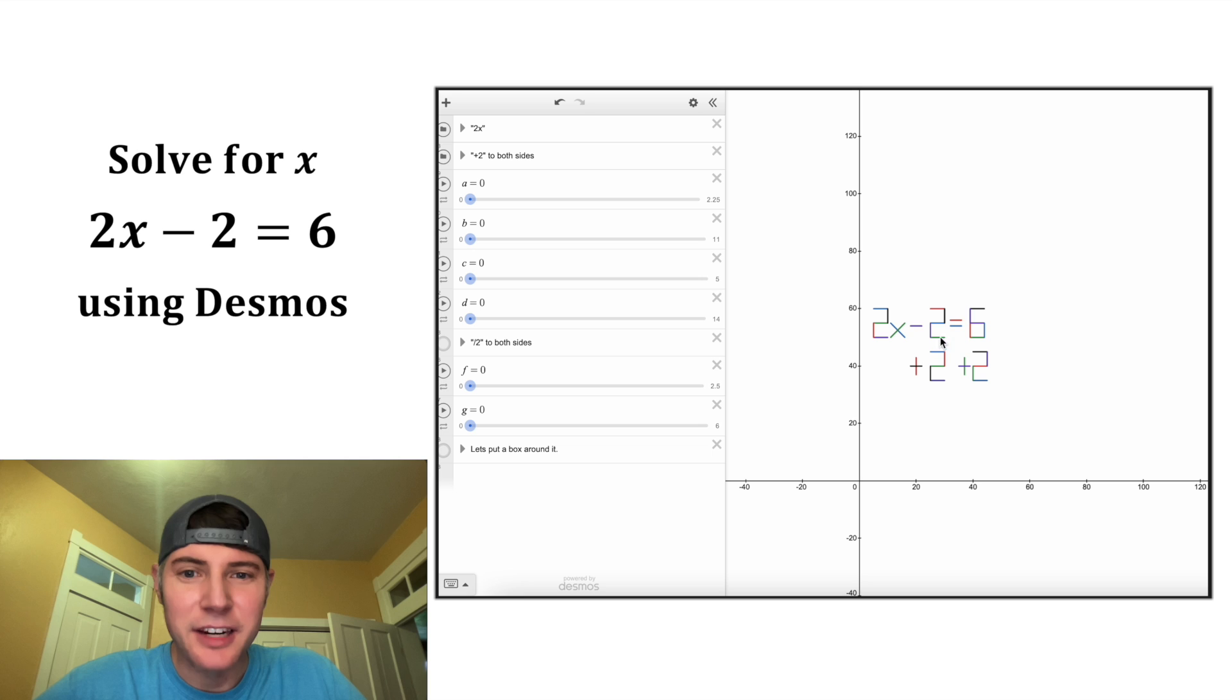On the left-hand side, this negative 2 and this positive 2 are going to cancel each other out. And on the right-hand side, this 6 plus 2 is going to be equal to 8. And now we're left with 2x is equal to 8.